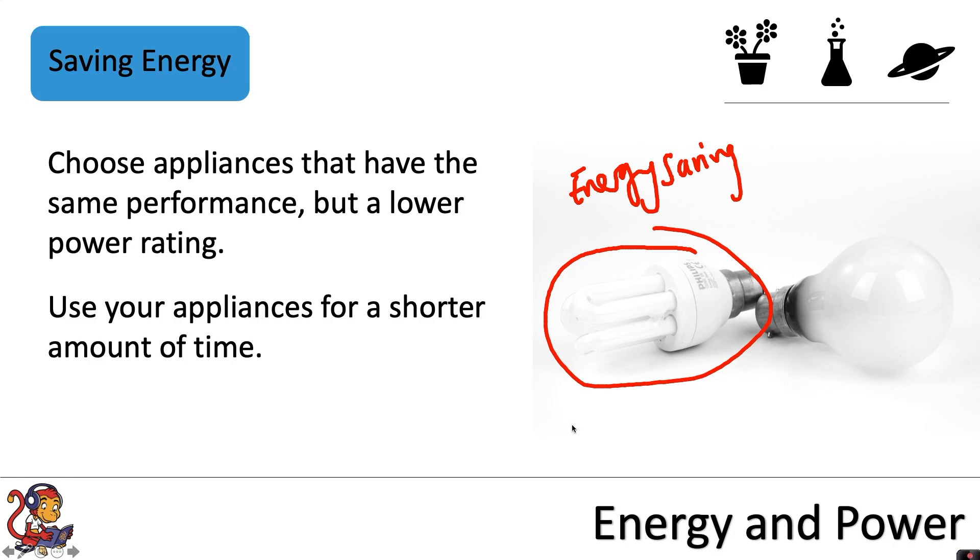Another important thing to save energy is to insulate your house. You'll see lots of examples of this: cavity wall insulation, loft insulation, draft excluders, double glazing. All of these things reduce the heat lost from your house and therefore save you money and energy in heating costs.